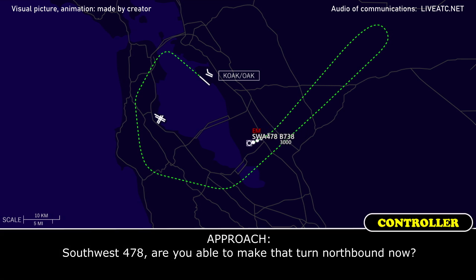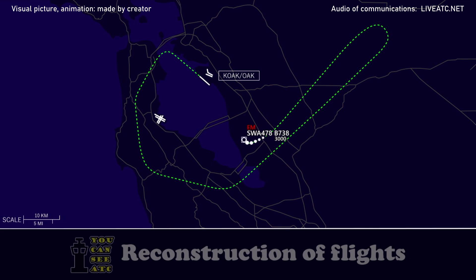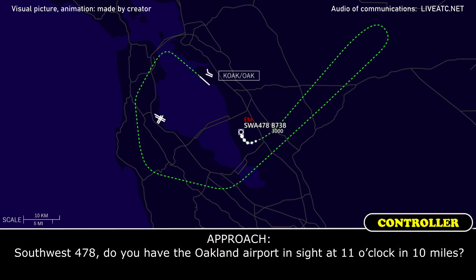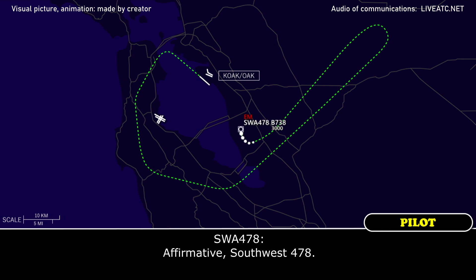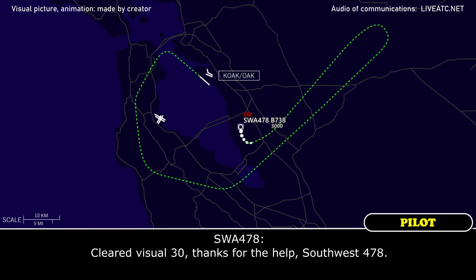ATC: Southbound 478, are you able to make that turn northbound now? Southbound 478: Yeah, we're at the turn now, southbound 478. ATC: Southbound 478, do you have the Oakland Airport in sight, 11 o'clock, 10 miles? Southbound 478: Affirmative, southbound 478. ATC: Southbound 478, cleared visual approach runway 30. Southbound 478: Cleared visual runway 30, thanks for the help, southbound 478.